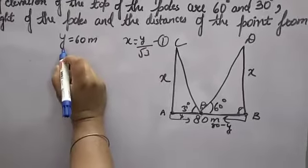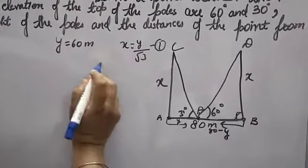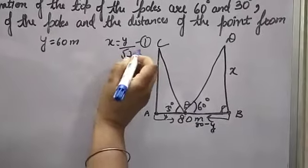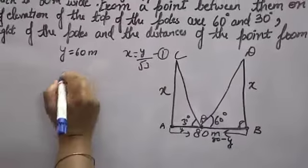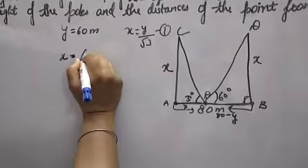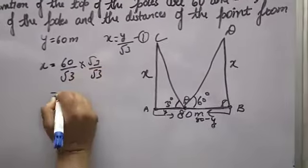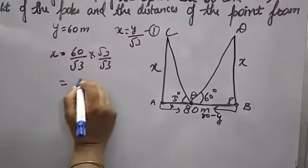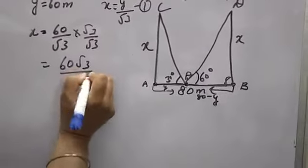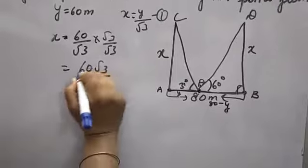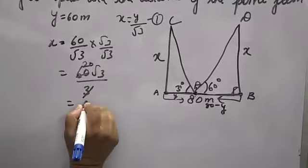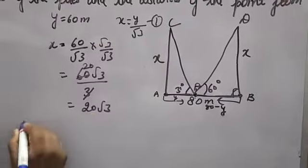Now as you know that y equals 60 meter, and x equals y over root 3. In first equation, x value will be 60 over root 3. You can rationalize it, root 3 upside and downside you will multiply. 60 into root 3, 60 root 3, root 3 into root 3 is 3. So x value is 20 root 3.